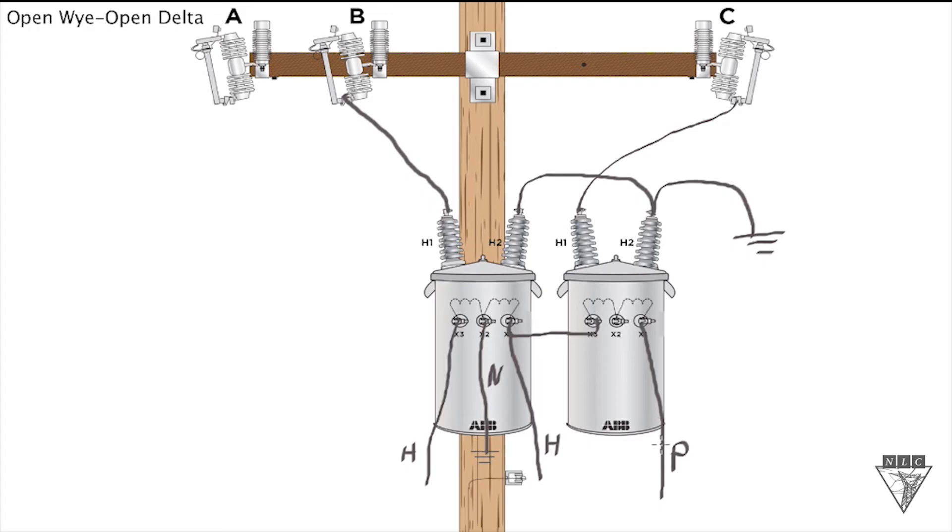You do not want to run the power leg to the home because then you'll be sending too much voltage into the home and you could burn up the electronics like TVs, computers, things of that sort. So you want to make sure that you identify what your power leg is and only use the power leg for the three phase load. For the single phase load, you want to utilize your two hot legs and the neutral.